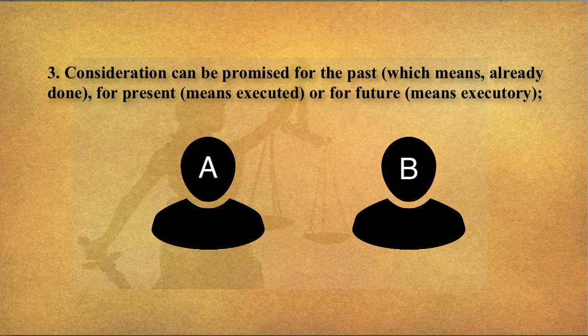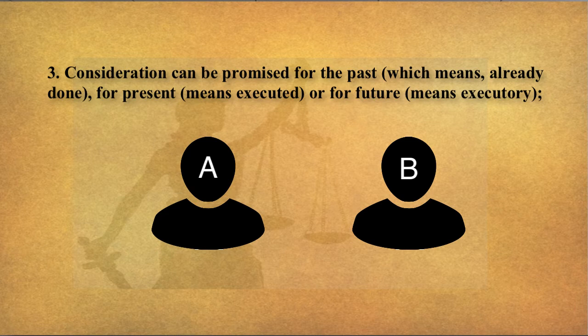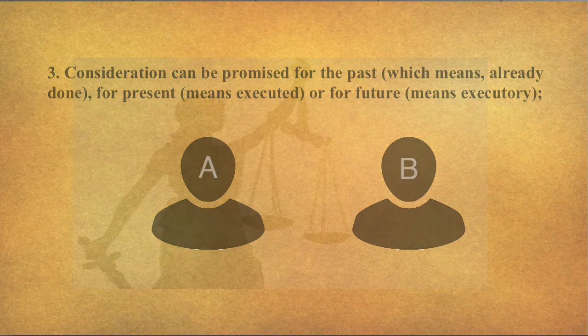For present consideration, there is no issue — you can appreciate that. For future consideration, it is also easy to understand: you promise to pay 50,000 rupees to buy your friend's car, pay 10,000 now and the rest — 40,000 rupees — after a month. That is also a valid contract.